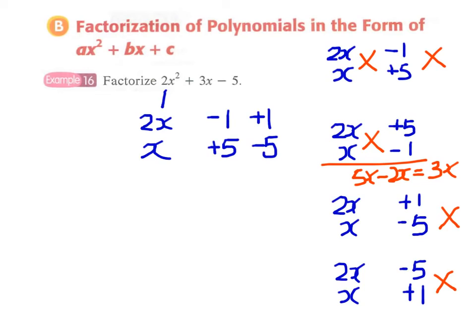the two factors: the first one will be 2x + 5 and the second one will be x - 1. Now we can write